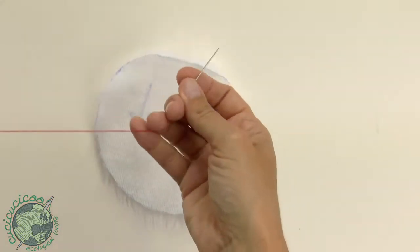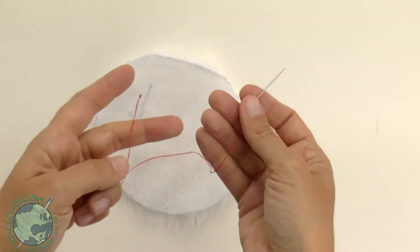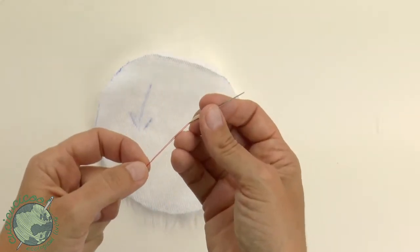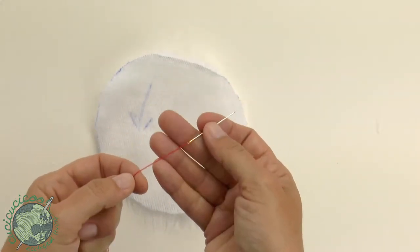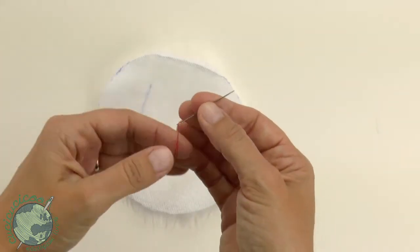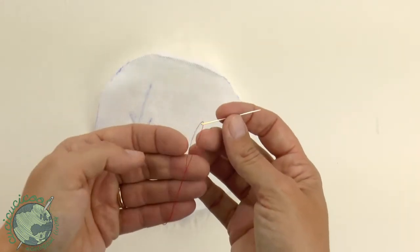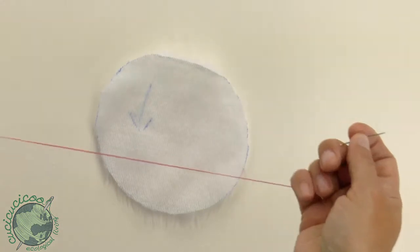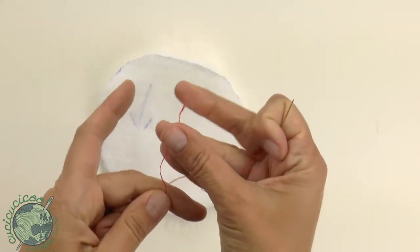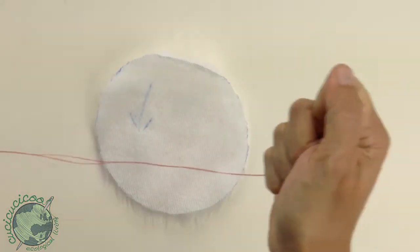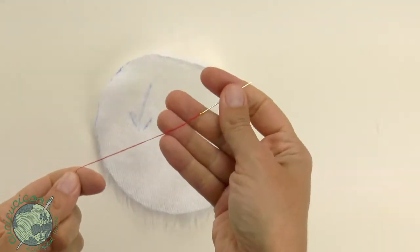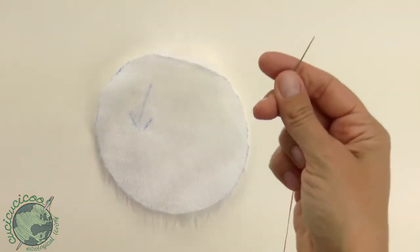Now thread your needle with a nice long piece of polyester thread. I really suggest you use polyester because cotton can snap. Notice I've used a double strand. I just did a really long strand, put it in, brought together the two ends and tied a knot. This way it's extra strong and it will be able to withstand the gathering that we're going to do in a moment.